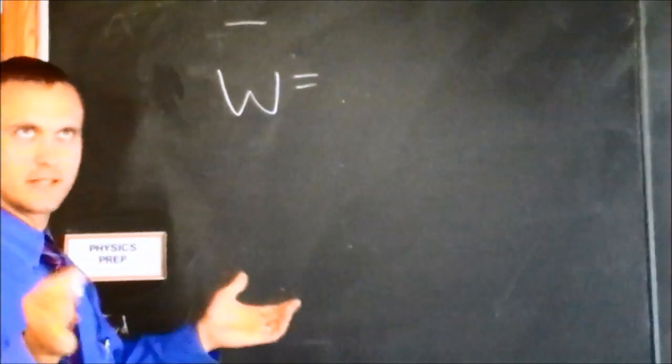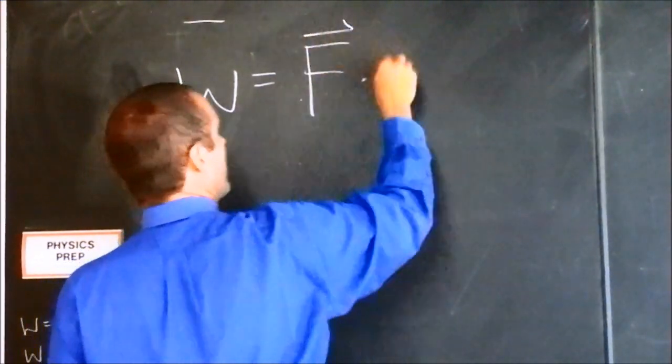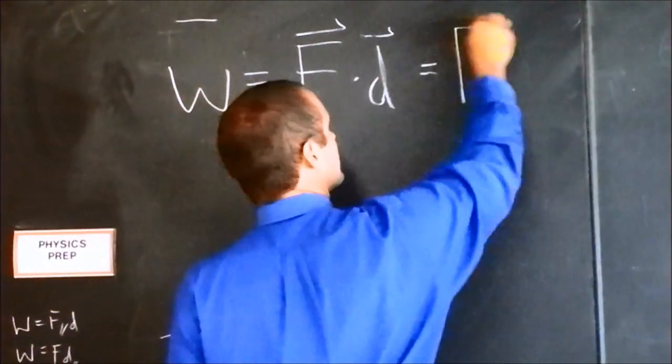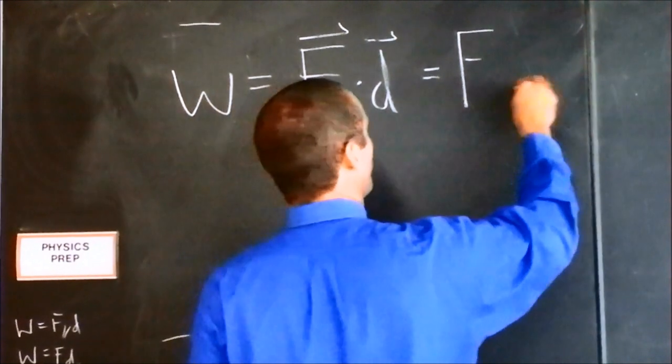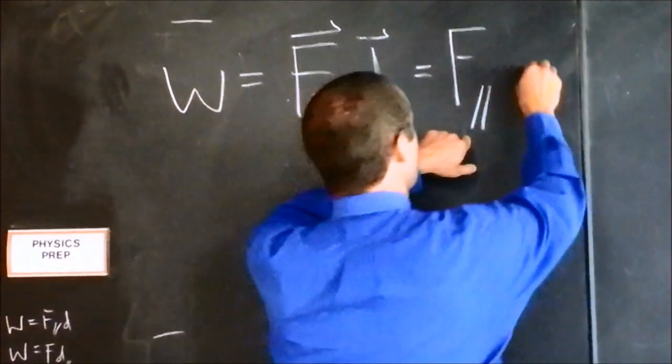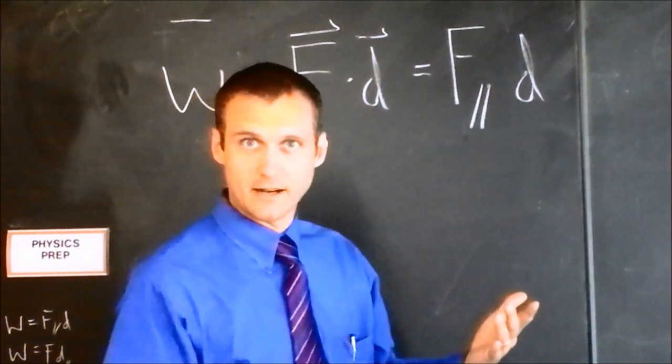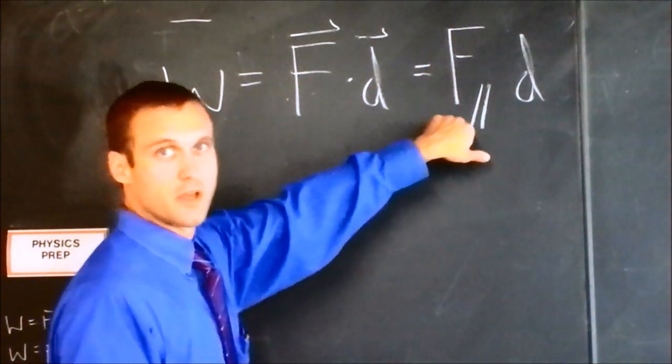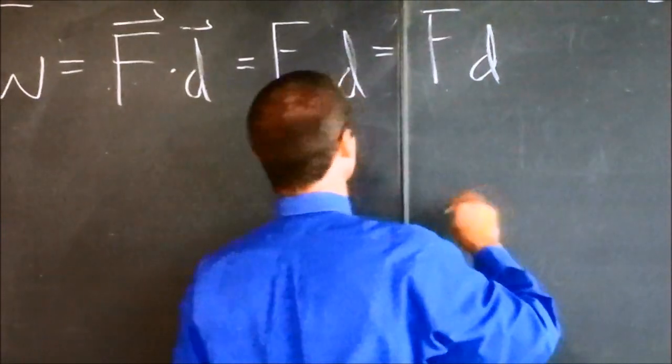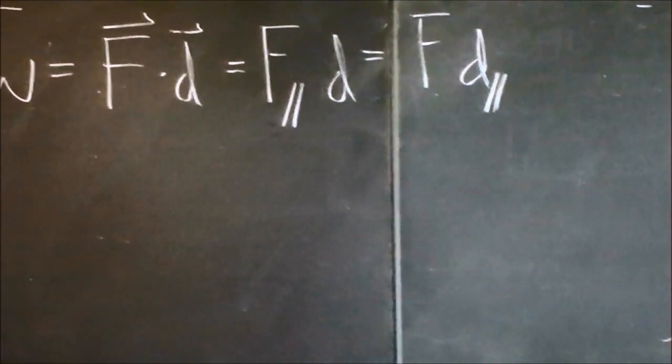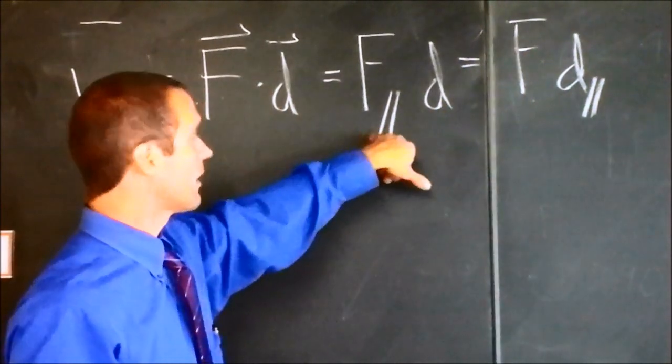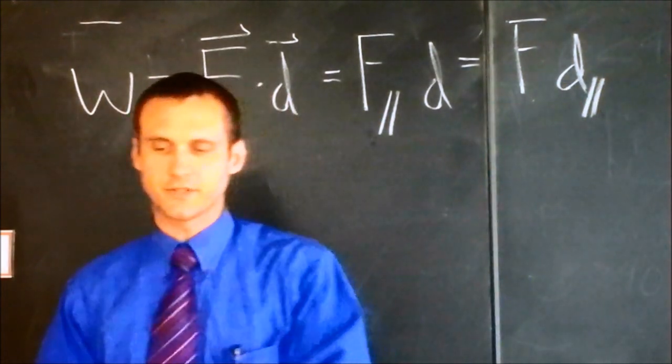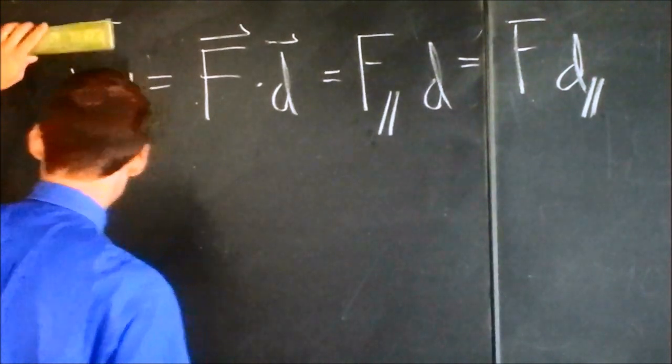So a couple more things on work. We can say that work, if we don't consider the integral form of work, is F dot d, just like last year. We can expand that and say maybe we don't want the full force, we just want the force that's parallel to the distance. So we'll take the parallel force and multiply that by the distance itself. We could similarly say that it's the force times the distance that's in the parallel direction to the force.